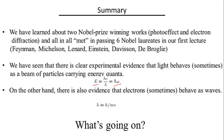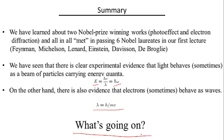So on the other hand, there is also evidence that electrons, massive particles, sometimes behave as waves. And the relation we just discussed is the de Broglie relation, λ = h/(mv). And in the next lecture, we'll try to figure out what is going on here.